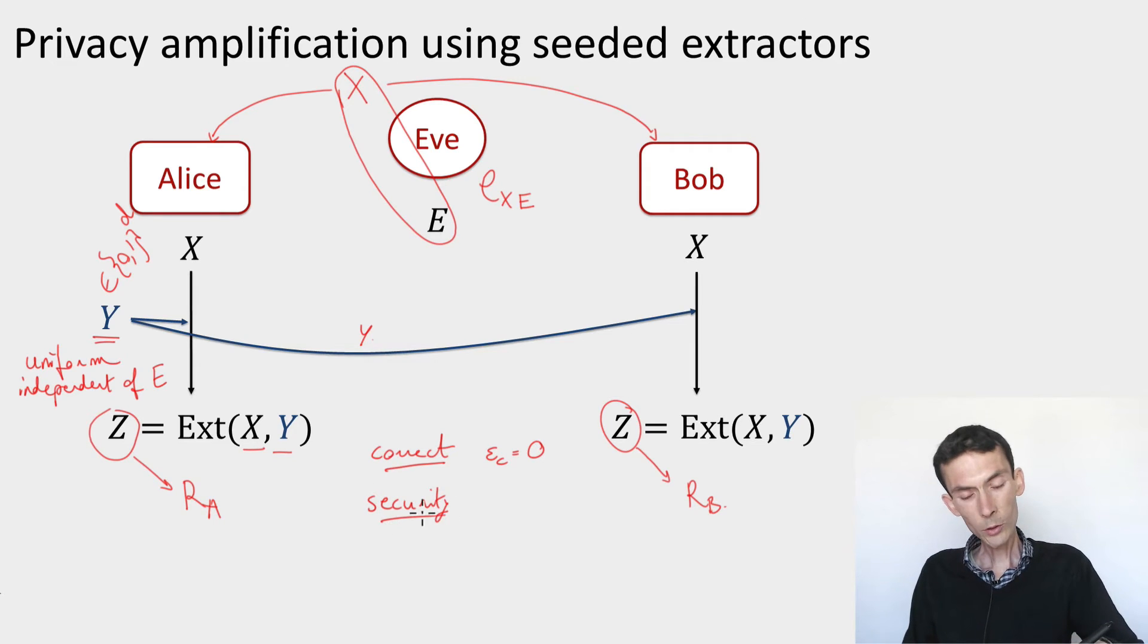Well, the security for privacy amplification was that the trace distance between the joint state of the output r_A and all the side information that's available to the eavesdropper, meaning the initial side information E plus the public communication, which here contains the seed Y.